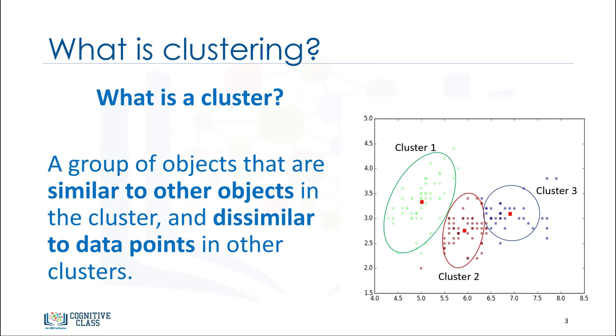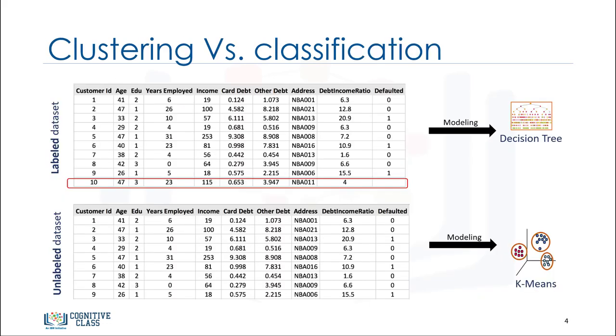Now, the question is, what is different between clustering and classification? Let's look at our customer dataset again. Classification algorithms predict categorical class labels. This means assigning instances to predefined classes such as defaulted or non-defaulted.